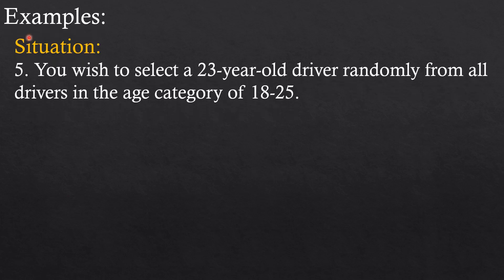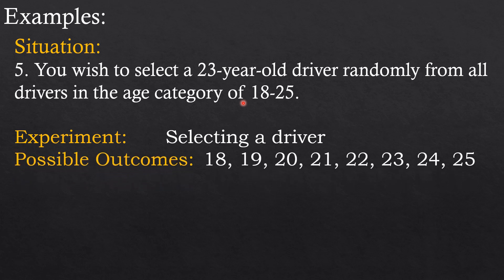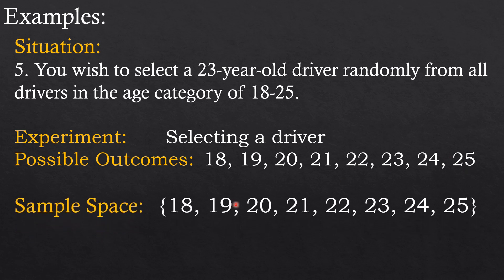Now let's proceed to example number five. The situation: you wish to select a 23-year-old driver randomly from all drivers in the age category of 18 to 25. This experiment is selecting a driver. Possible outcomes are the ages 18 to 25: 18, 19, 20, 21, 22, 23, 24, 25. Sample space are all the possible outcomes, and the event is a non-teenage driver.